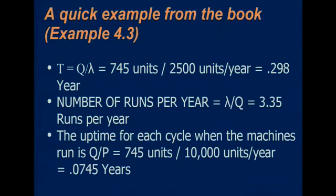Now how many times do we start this production process, or what's the time between starting it? We're producing 745 units at a time, we use 2,500 units per year, so basically 0.3 of a year we're running the machine and then we turn it off, or that's our cycle time. The number of runs per year would be 3.35, and the uptime in each cycle would be 745 units divided by our production rate which is 10,000. So the machine's on for 0.07 of a year and then it would be off for 0.21 of a year, and then on for 0.07 of a year and off for 0.21. Everybody kind of follow?